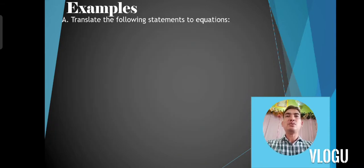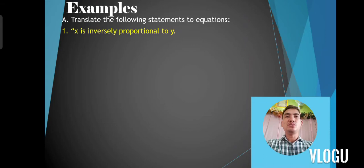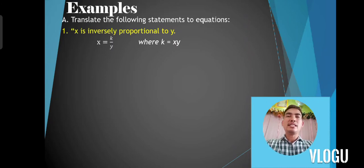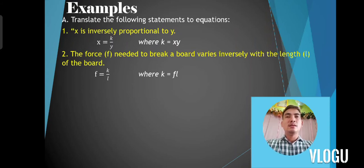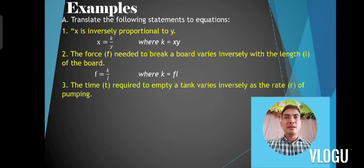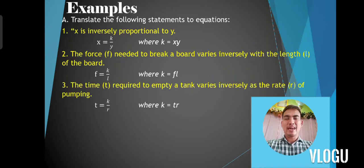Let's take examples — translating statements to equations. Number one: x is inversely proportional to y, which can be represented by x is equal to k over y, where k is equal to x times y. Number two: the force F needed to break a board varies inversely with the length L of the board, represented by F is equal to k over L, where k is equal to F times L. Number three: the time T required to empty a tank varies inversely as the rate R of pumping — T is equal to k over R, where k is equal to T times R.